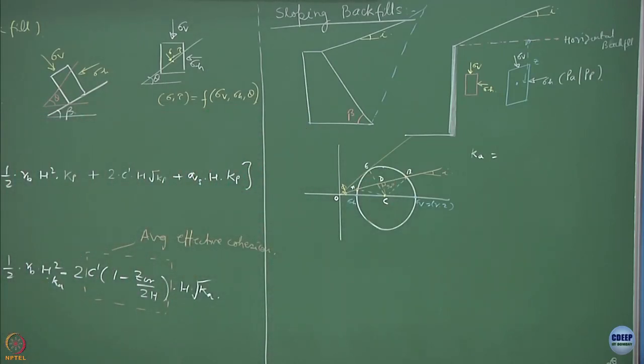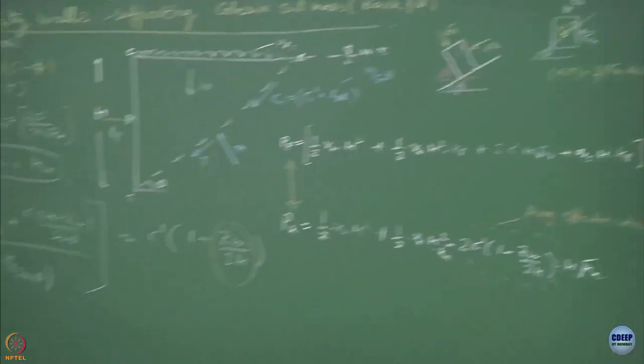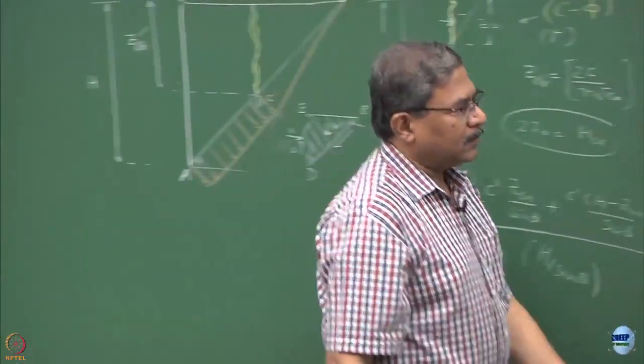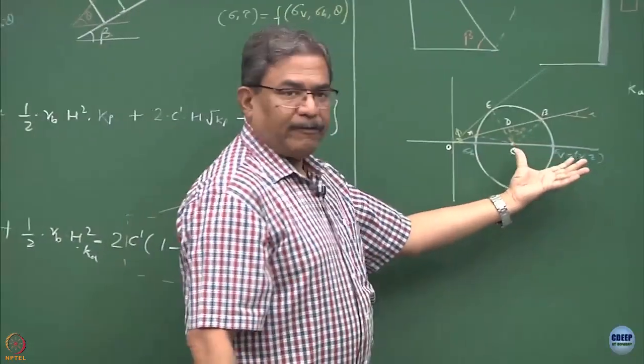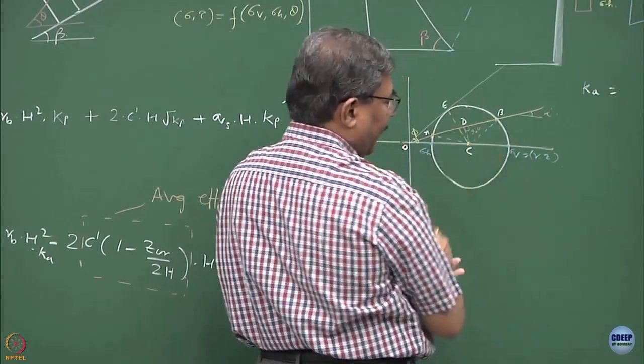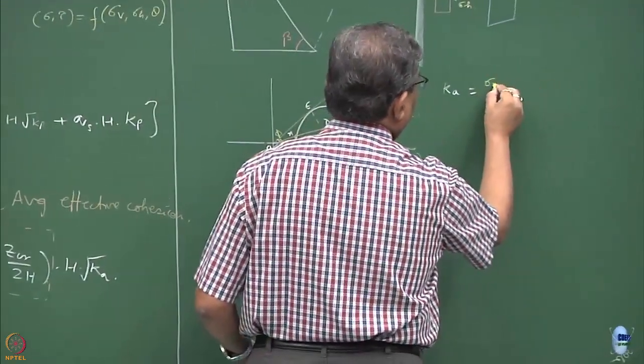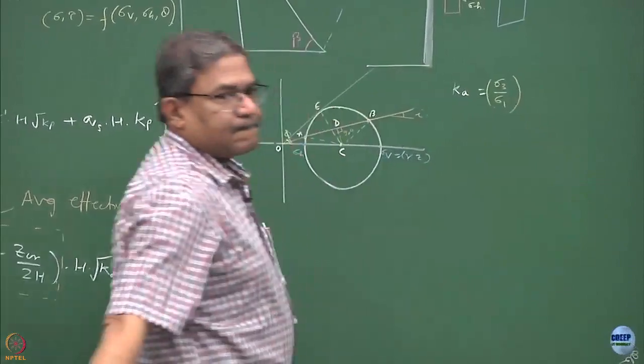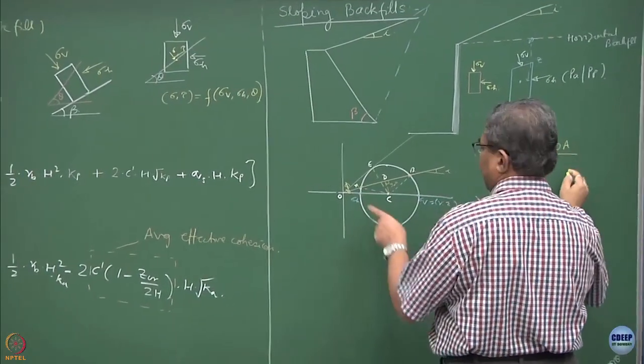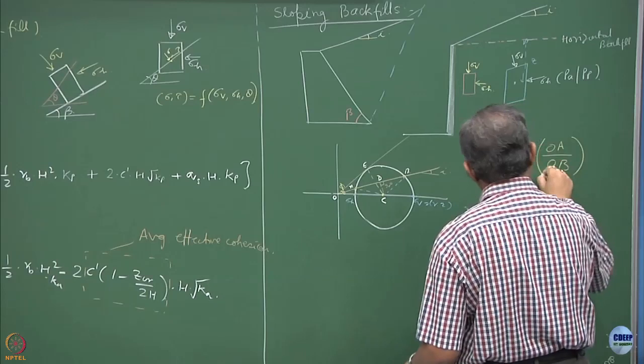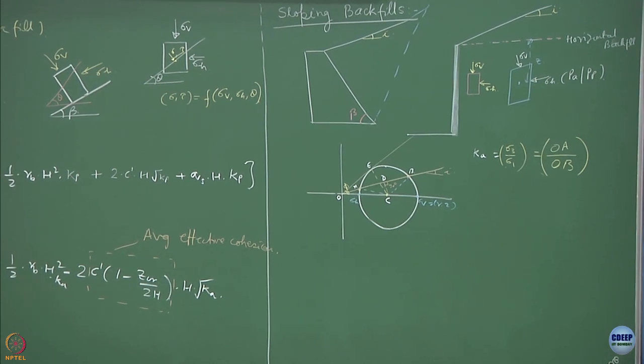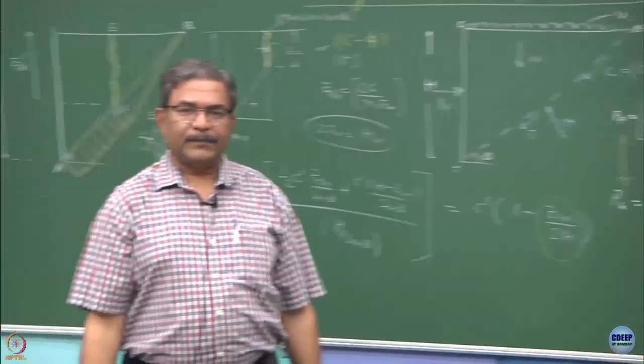The most interesting thing here to follow is when i was 0, what was the value of Ka? Ka value was sigma h upon sigma v. So that means sigma 3 divided by sigma 1 was the Ka value. Now this is equal to OA divided by OB in the new system. Have you understood this thing? Rest is all geometry.